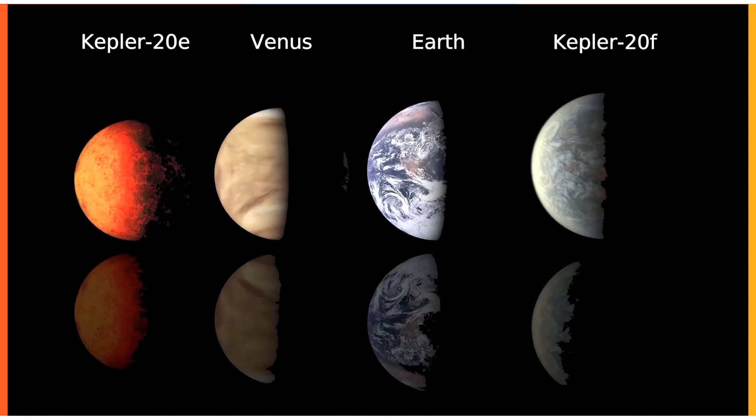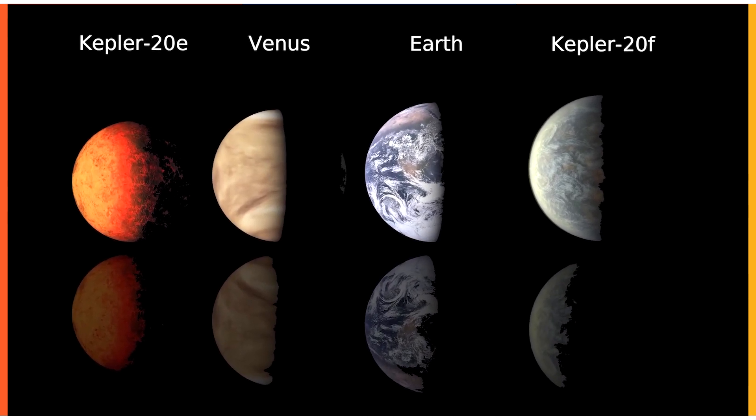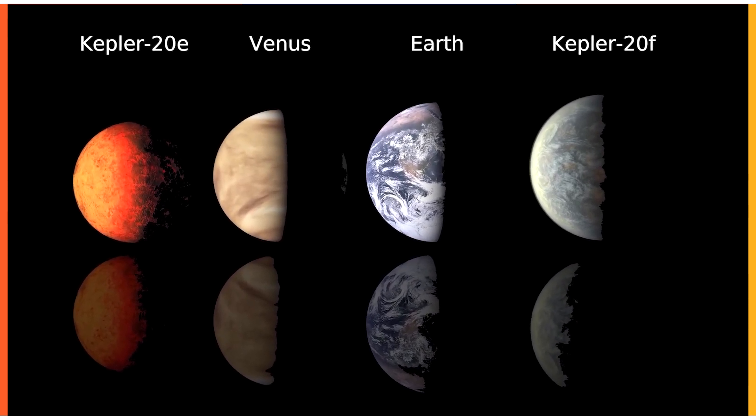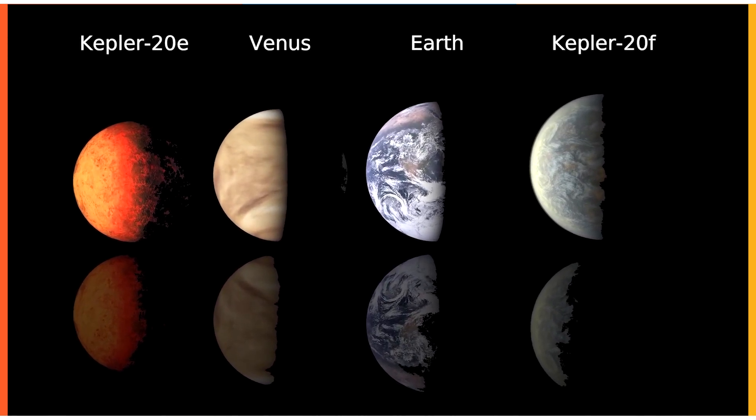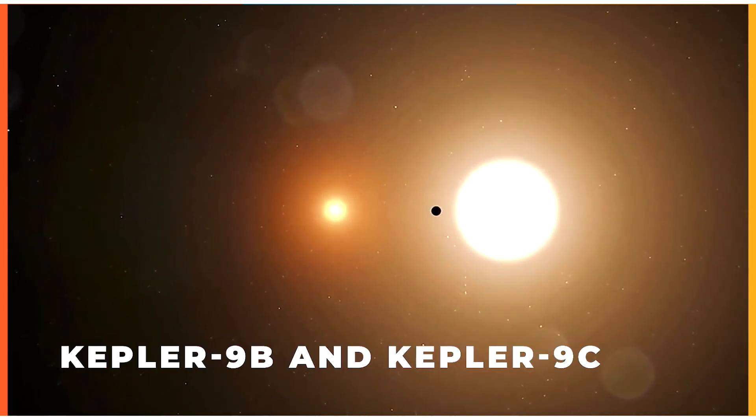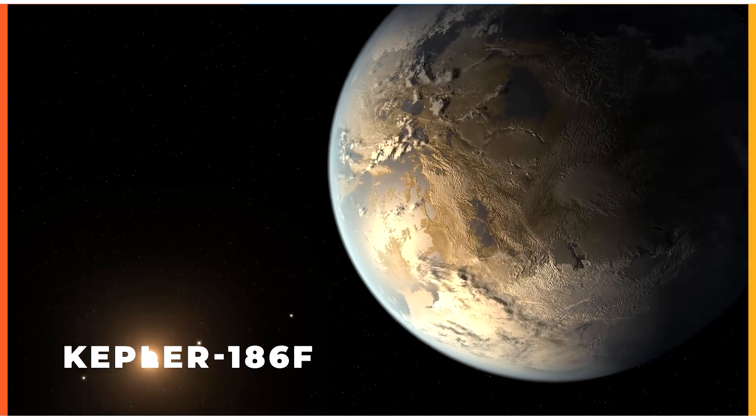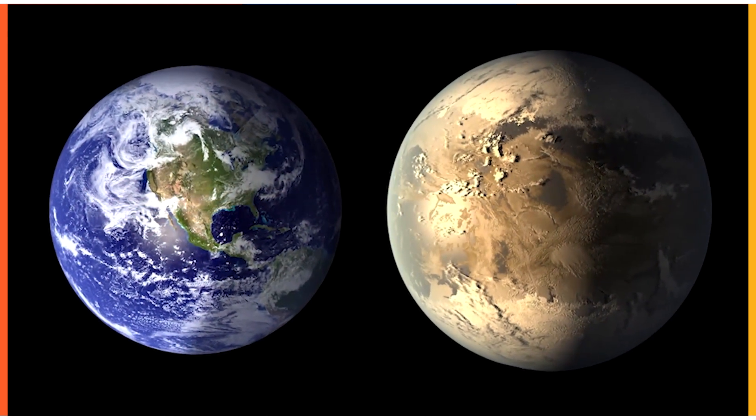The first Earth-sized planets discovered were Kepler-20e and Kepler-20f, with radii of 0.87 and 1.03 times that of the Earth, respectively. The first two planets to transit the same star were Kepler-9b and Kepler-9c. Kepler-186f was the first Earth-sized planet discovered within its star's habitable zone.